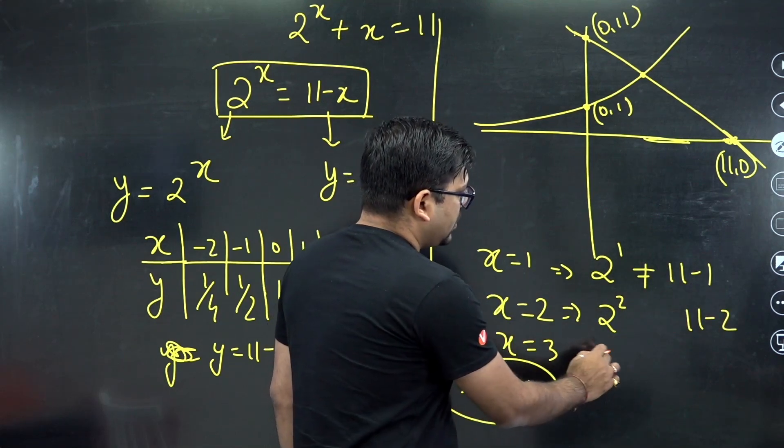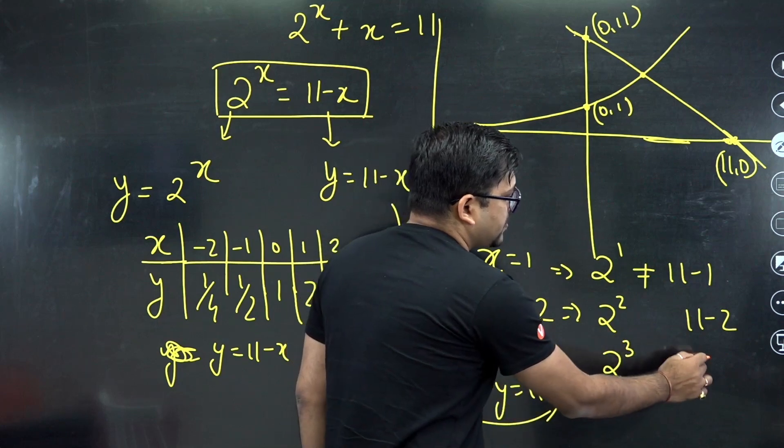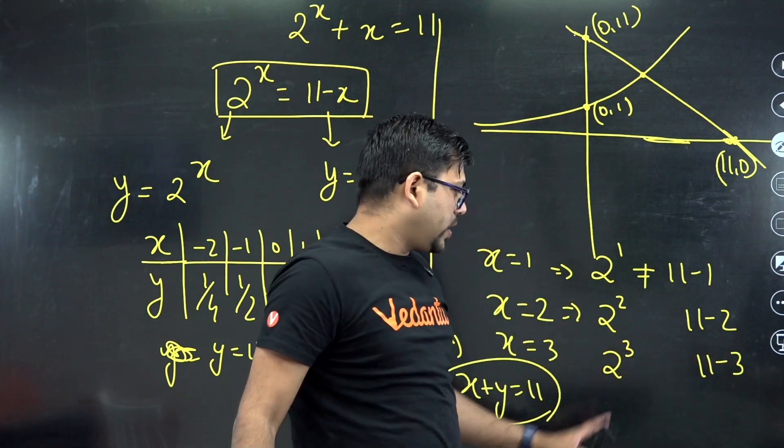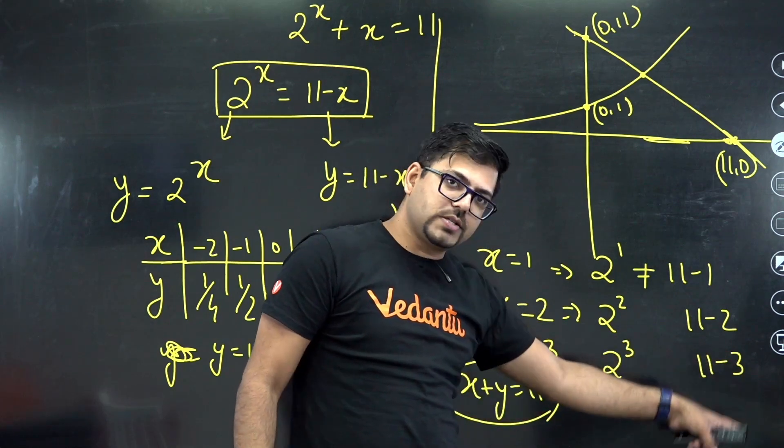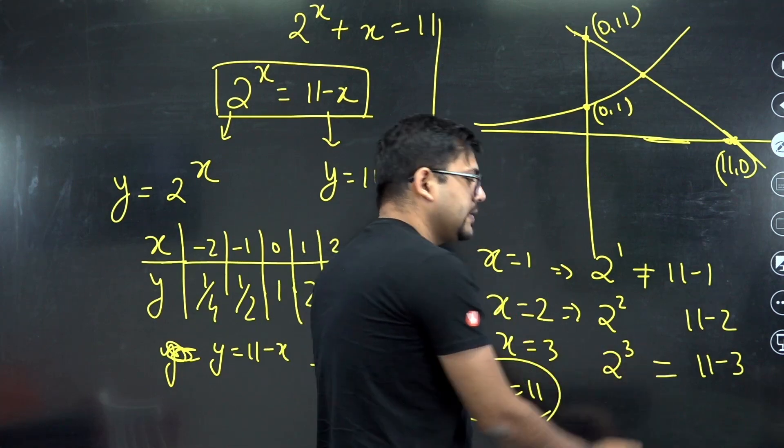Similarly, at x equals 3, this becomes 2 raised to power 3 and this becomes 11 minus 3. So 2 raised to power 3 is 8, 11 minus 3 is also 8, and hence this is the solution.